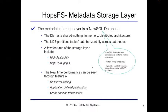The metadata storage layer has a database with a shared-nothing, in-memory distributed architecture. The network database called NDB partitions table data horizontally across data nodes. Features of the storage layer include high availability and throughput, and real-time performance can be seen through features such as row-level locking and application-defined partitioning, which allows the user to override the default partitioning of the network database.